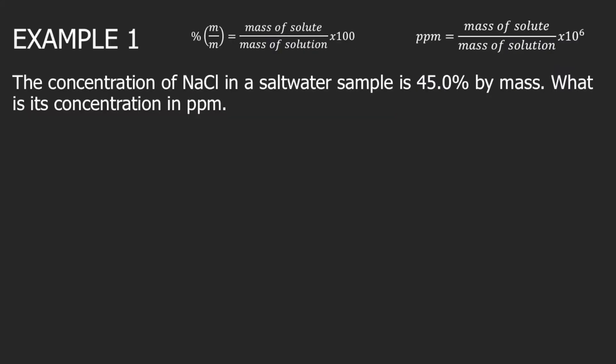Let's try answering example one. The concentration of sodium chloride in a salt water sample is 45% by mass. What is its concentration in PPM? In this example, we are given mass percent — that's 45% by mass — and we will convert this to PPM.